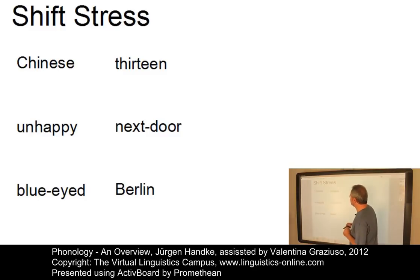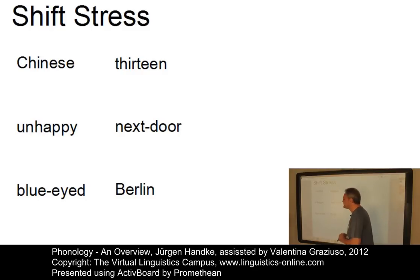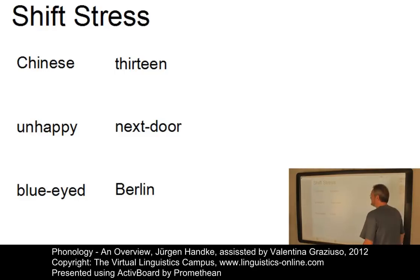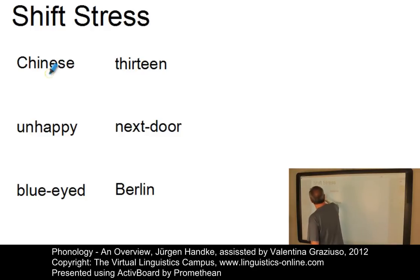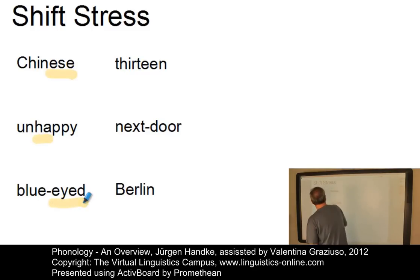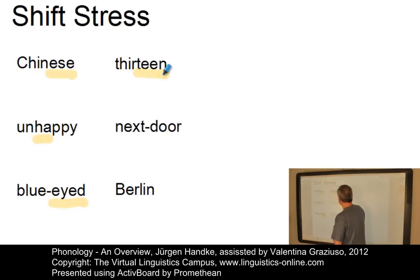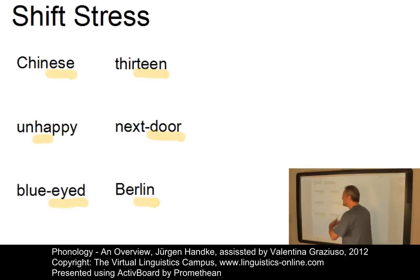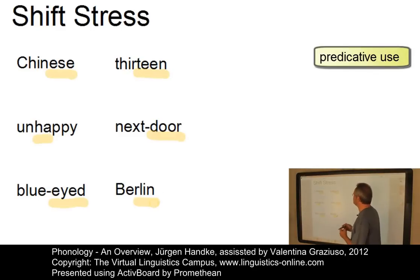In these words, which are all adjectival in character, we can see two stress patterns. One which occurs when they are used in a predicative context or in isolation — in such cases their second syllable is stressed. So you have: 'Chinese,' or 'the guide is Chinese'; 'she felt unhappy'; 'she is blue-eyed'; 'my sister is 13'; 'they live next door'; and 'the German capital is called Berlin.' In all these predicative contexts, we stress the second syllable.